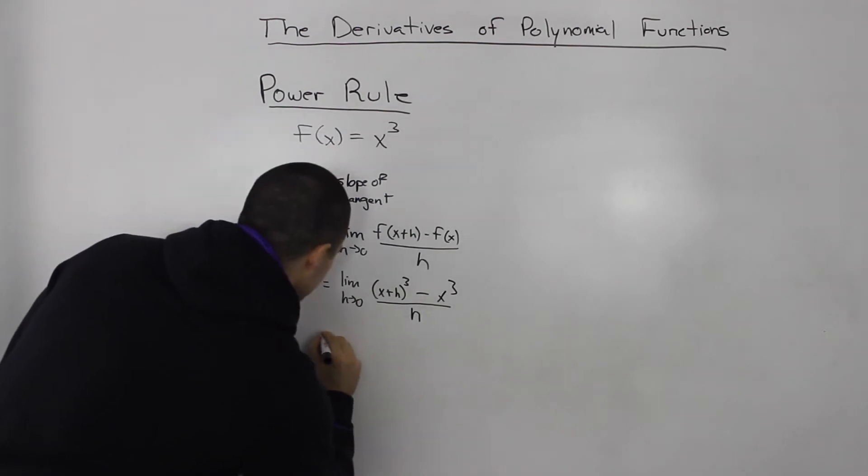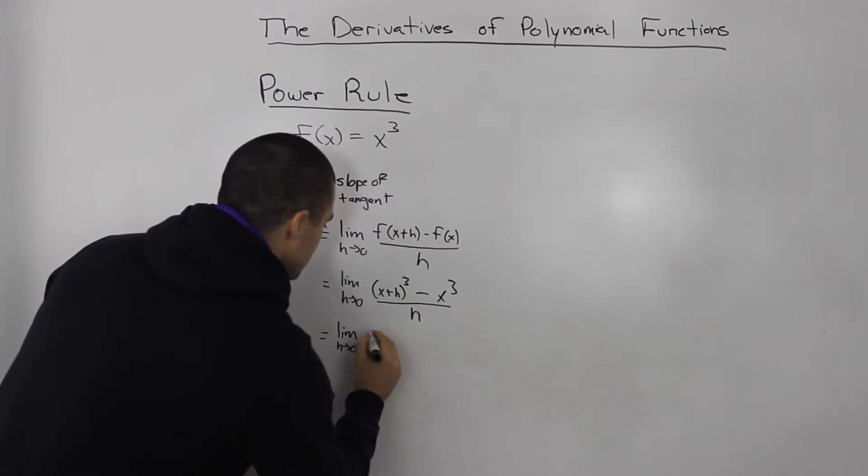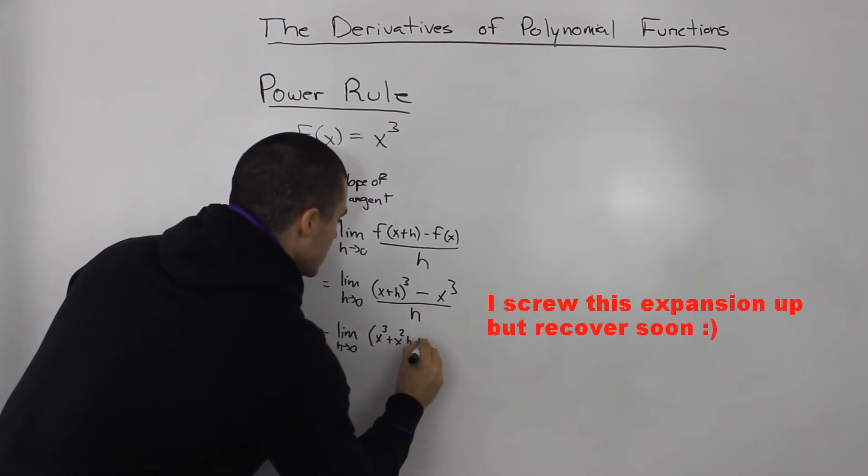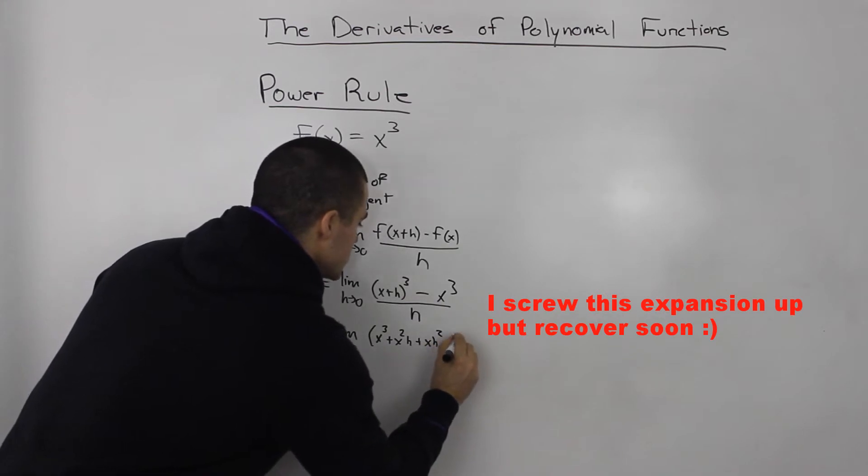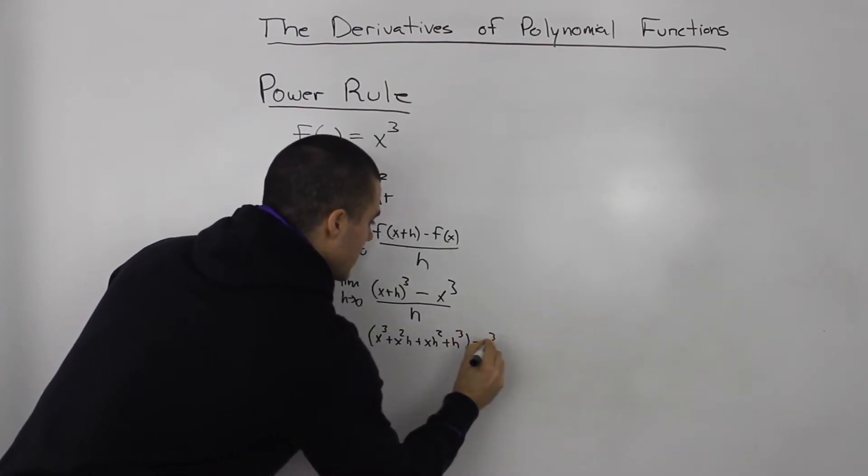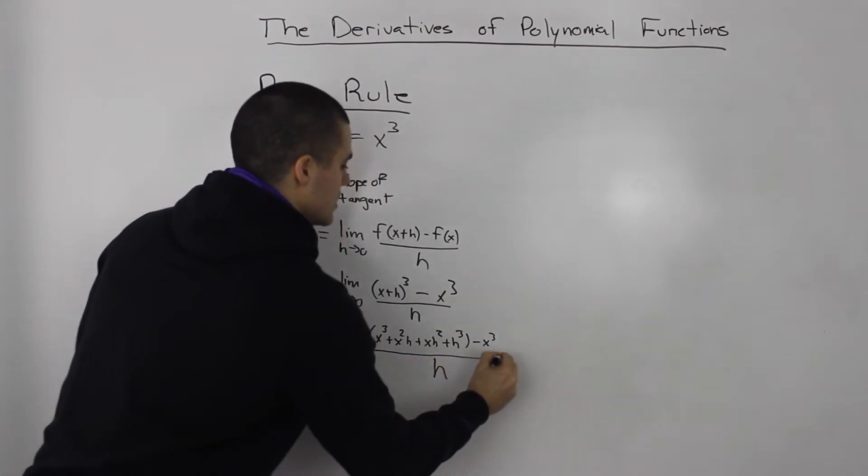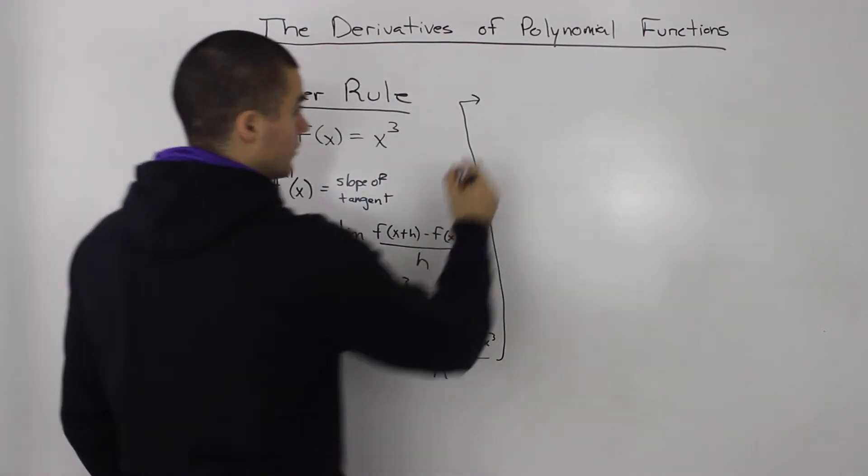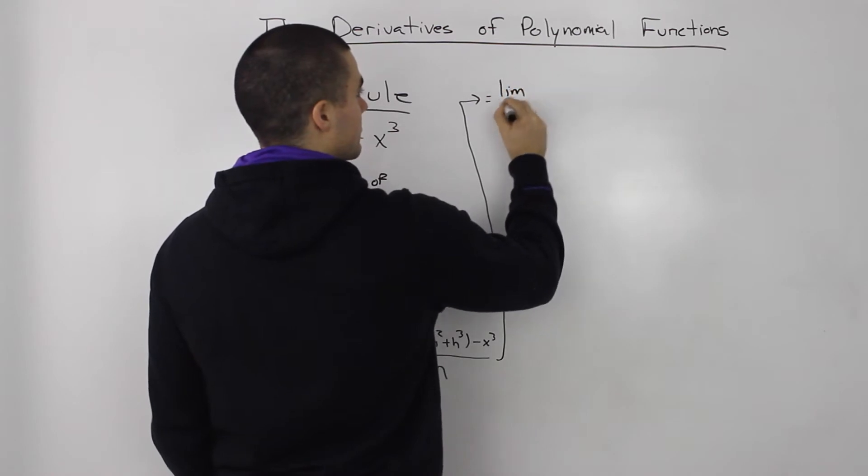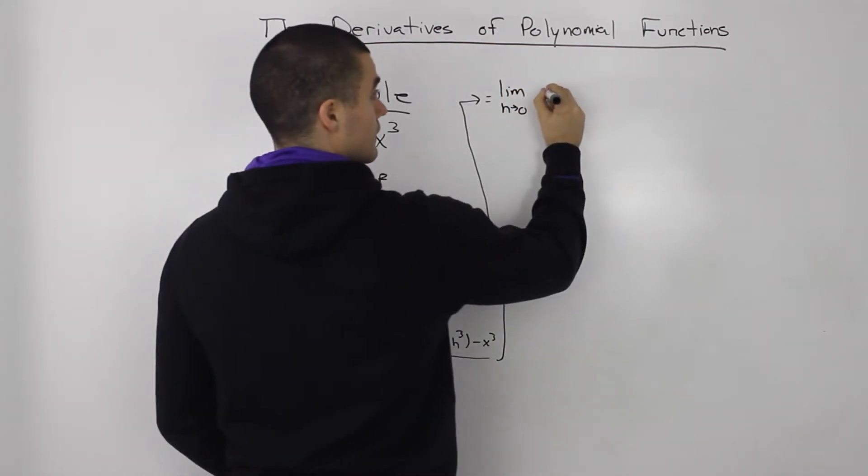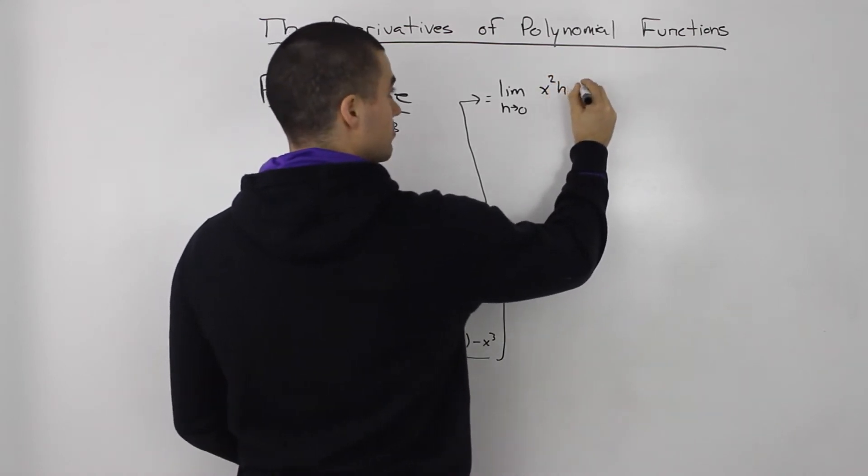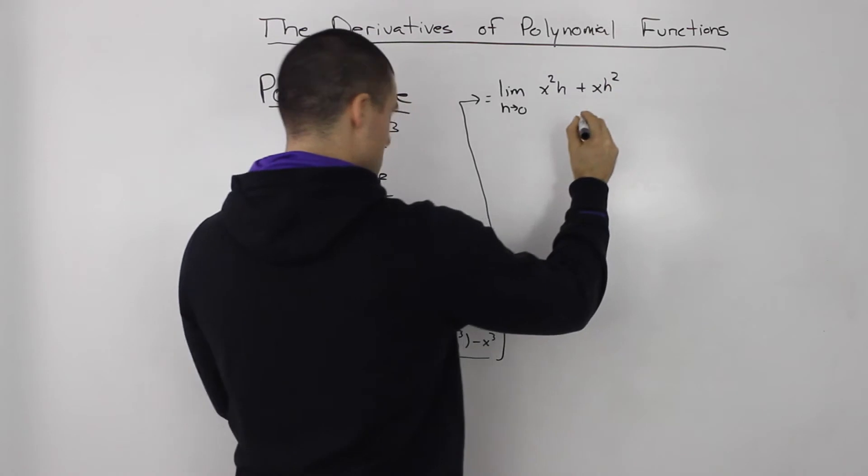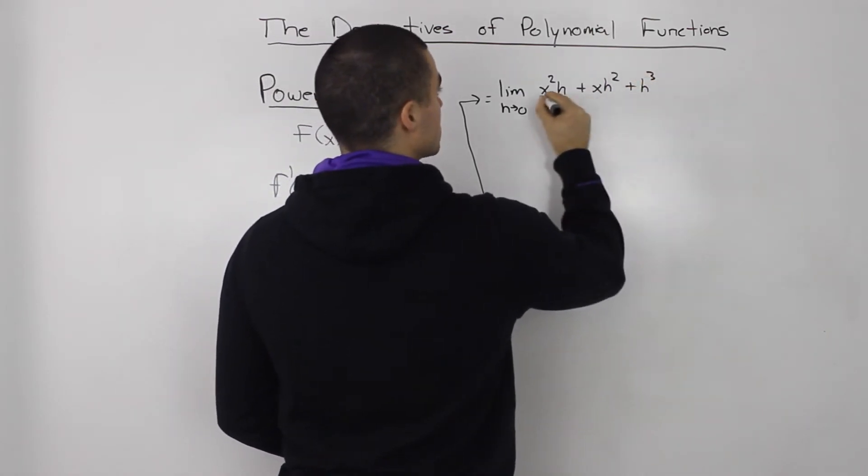Now let's expand this. If you were to foil this out, you'll get x cubed plus 3x squared h plus 3xh squared plus h cubed all over h.